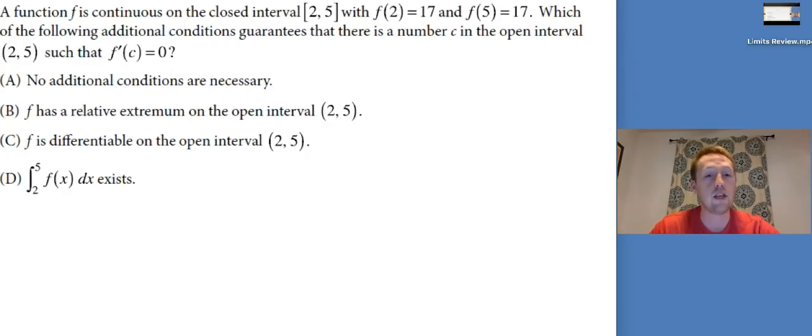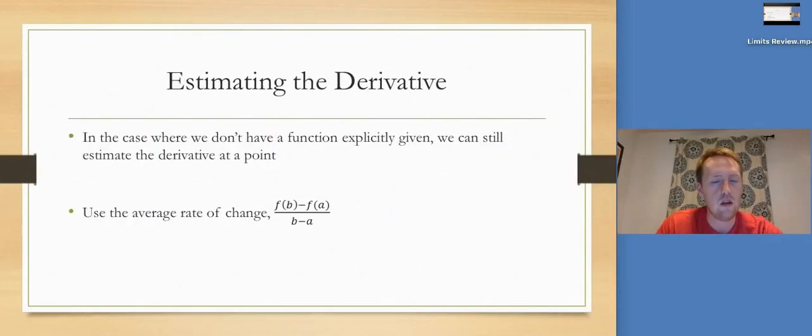Function F is continuous on the closed interval, which of the following additional conditions guarantees that there is a number C in the open interval, such that F prime of C equals 0. That sounds like intermediate value theorem, the existence of a derivative value. All we would need is it's differentiable. A, B, and D are wrong. It's C. We need it to be differentiable.